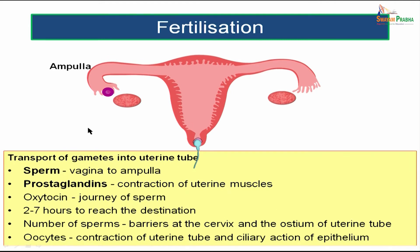The sperm will be traveling through the vagina into the ampulla of the uterine tube, and prostaglandins will help in the contraction of the uterine muscles. Oxytocin will also aid in the journey of the sperm into the uterine tube. The estimated time is roughly 2 to 7 hours to reach the destination. The number of sperms reaching the uterine tube will have to cross many barriers, at the cervix and also at the ostium of the uterine tube.